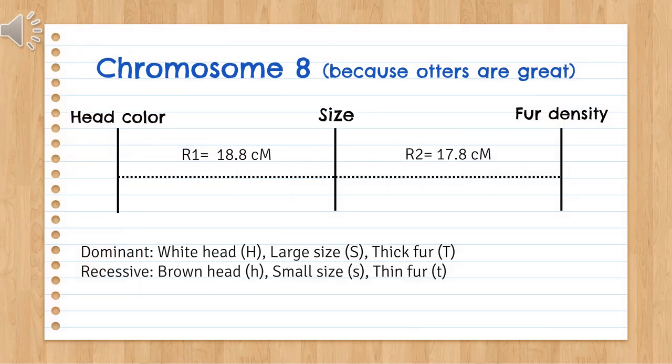Chromosome 8 is where we'll be looking at the three linked loci: head color, body size, and fur density. The head color of an otter can be white, the dominant type, or brown, the recessive type, designated by capital H or lowercase h. The body size can be either large, the dominant type, or small, the recessive type, designated by capital S or lowercase s. Lastly, the density of an otter's fur is either thick, the dominant type, or thin, the recessive type, designated by capital T or lowercase t.